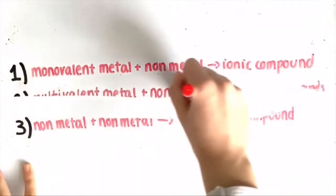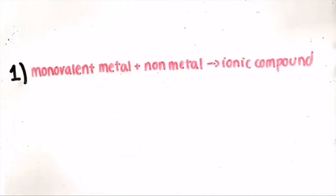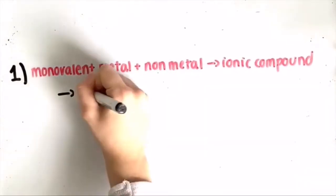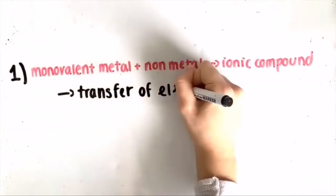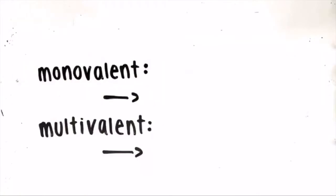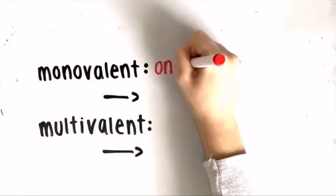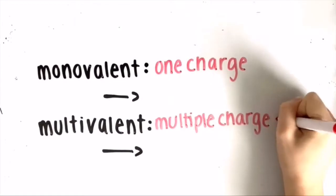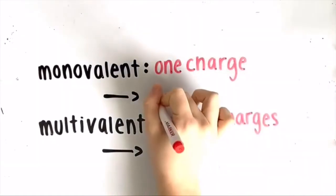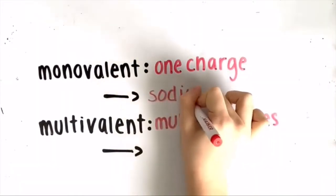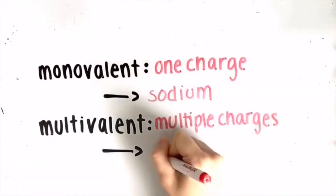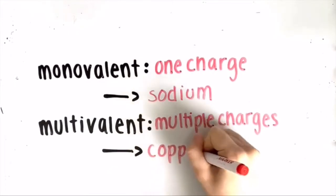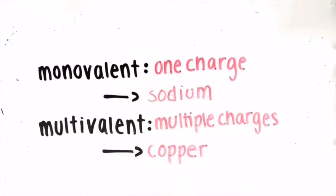Firstly, a monovalent metal reacts with a non-metal to form an ionic compound. During this reaction, there is a transfer of electrons. A metal that is monovalent means that it has one set charge, as opposed to a multivalent metal. For example, sodium is monovalent because it only has a charge of positive 1, while copper is multivalent because it can have a charge of either positive 1 or positive 2.